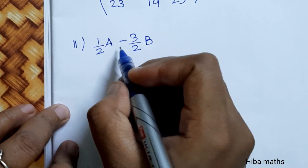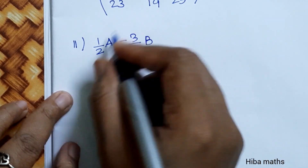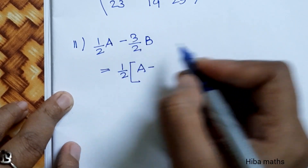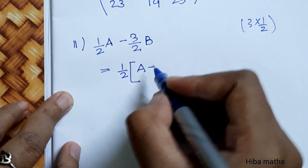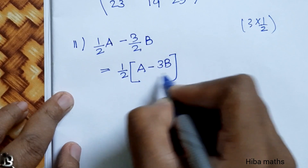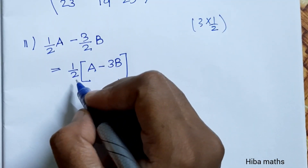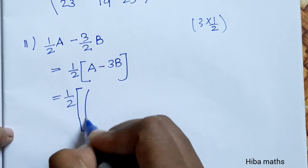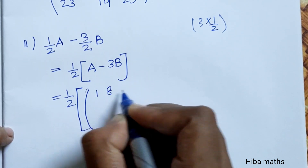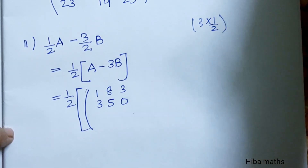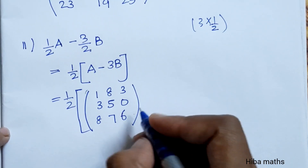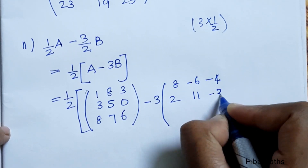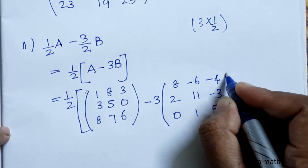Second subdivision: (1/2)A minus (3/2)B. We take 1/2 as a common value, giving us (1/2) times the quantity A minus 3B. We write out A matrix and B matrix: 8 -6 -4, 2 11 -3, 0 1 5, bracket closed.